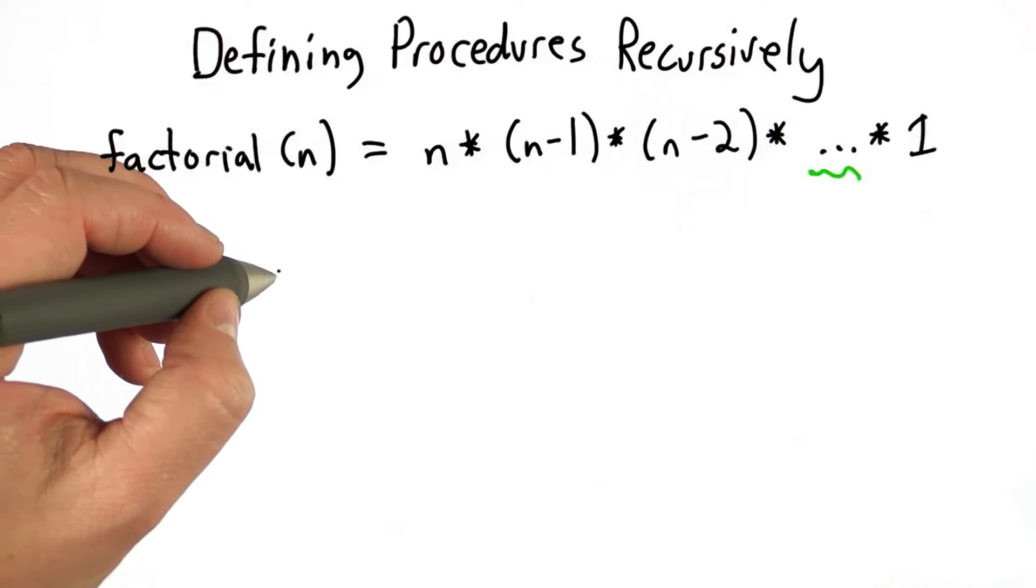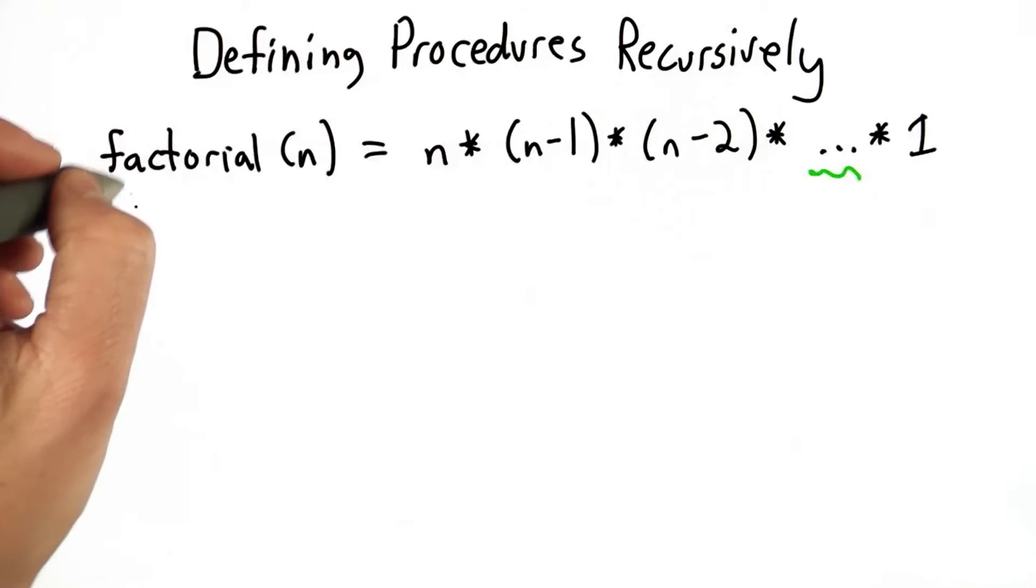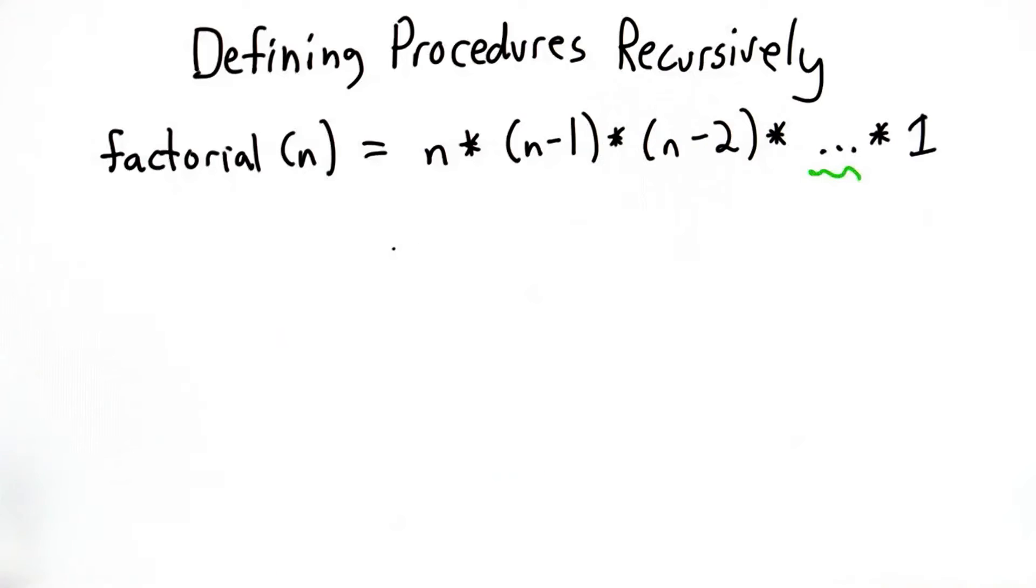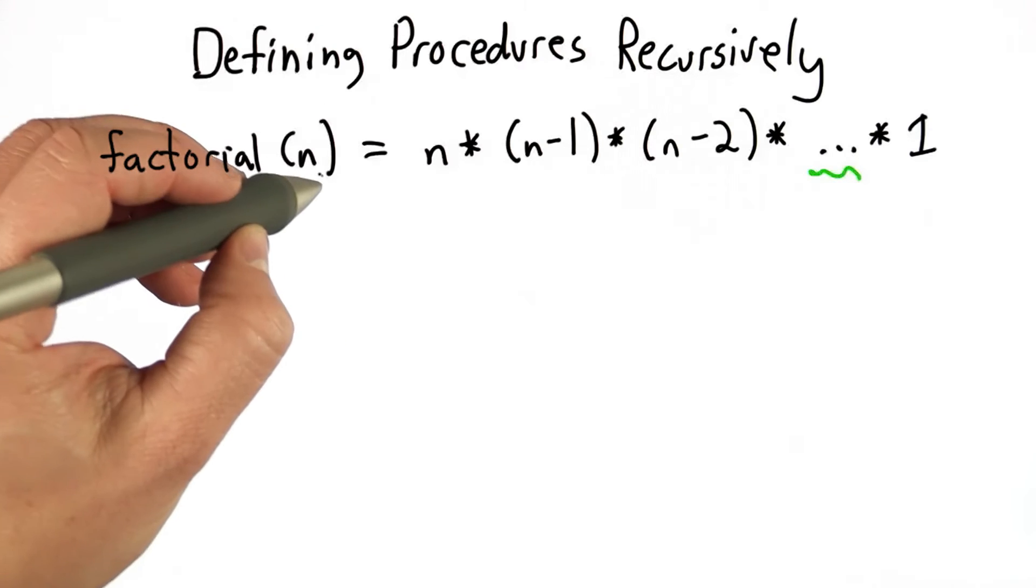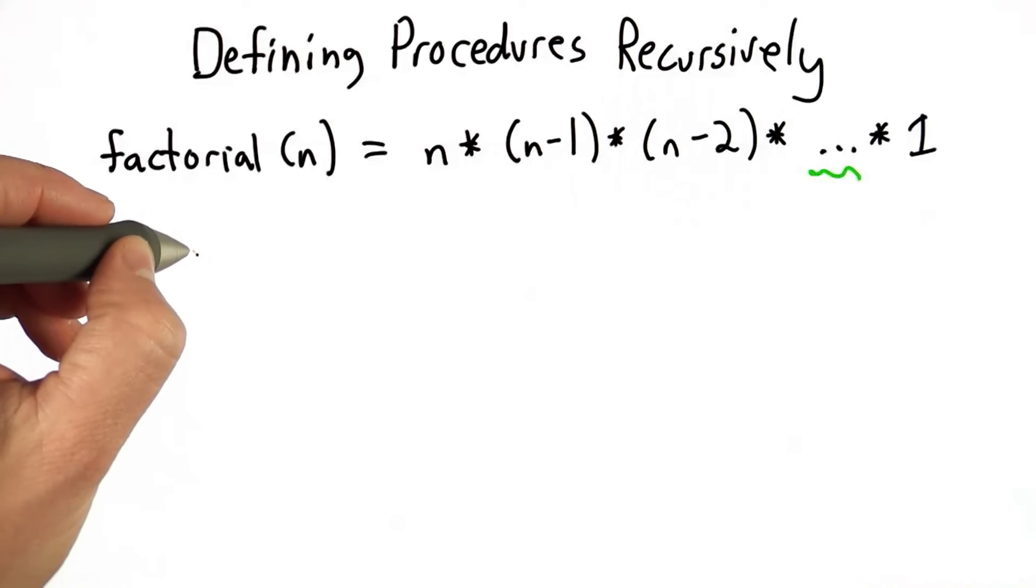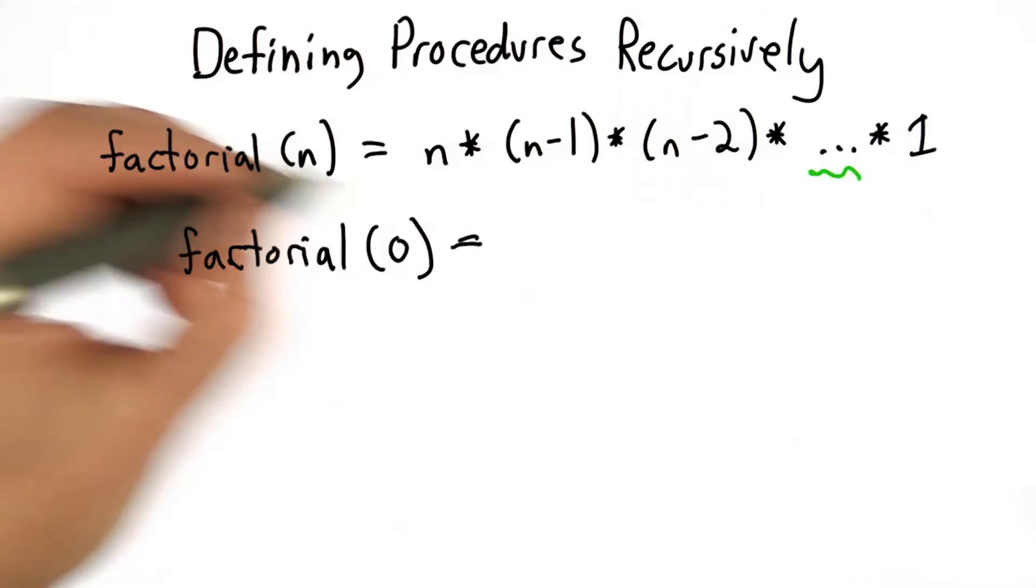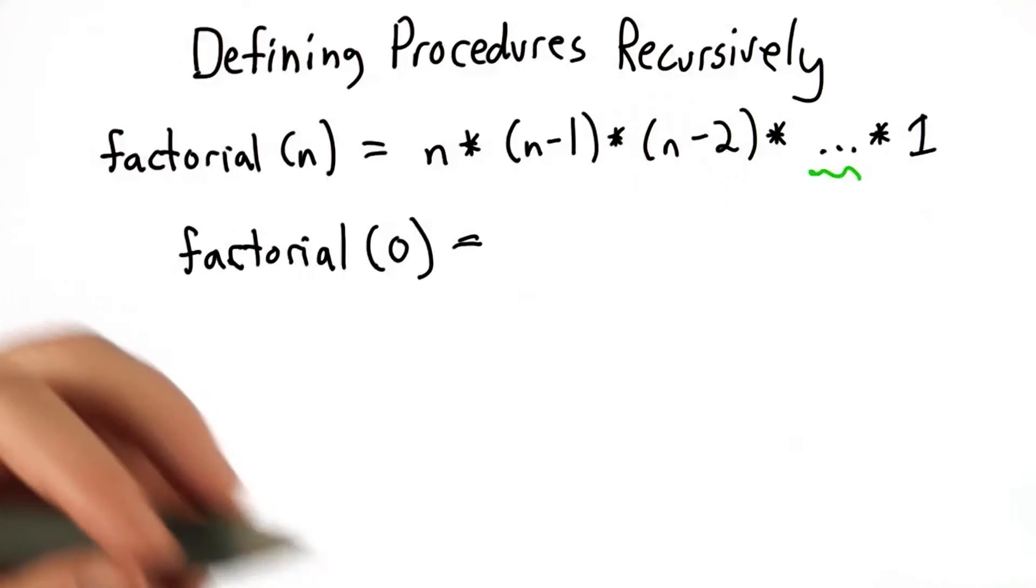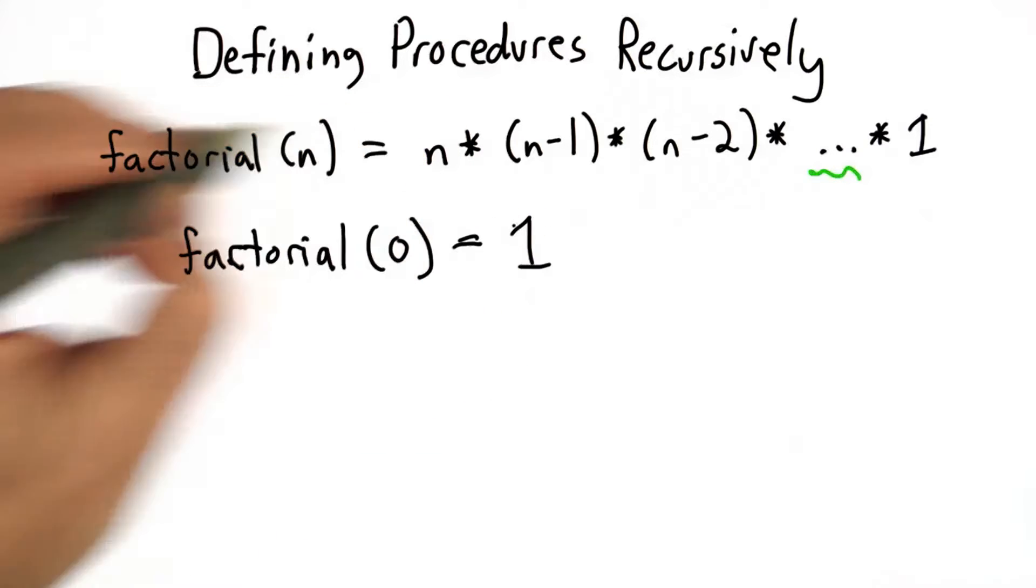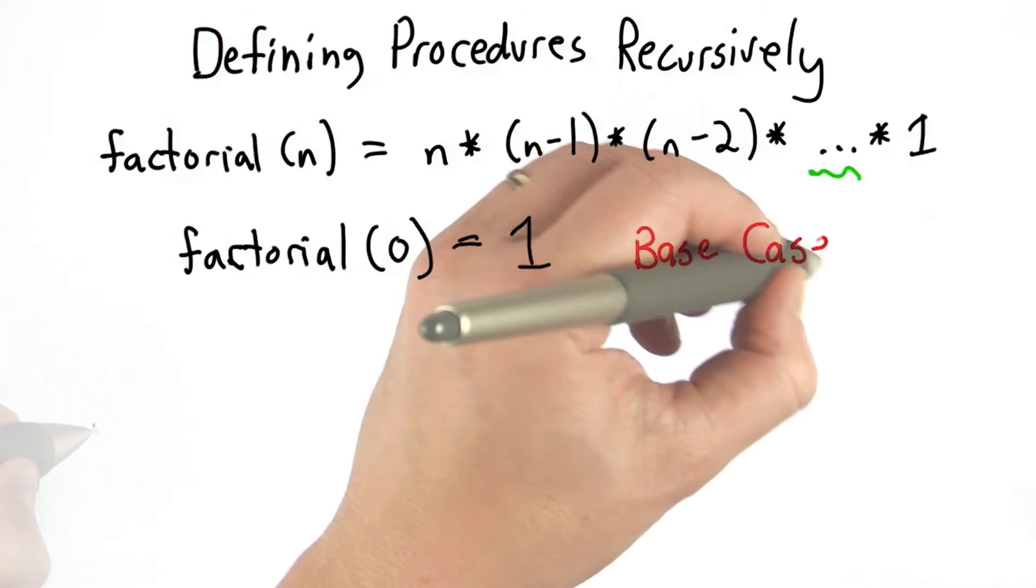And we need to do that by giving a base case. So for the base case, we want to think about the simplest input, something where we already know the answer. And for factorial, and for many procedures that involve numbers, the simplest input is the number 0. So if we try factorial 0, the number of ways to arrange 0 things is defined as 1. So we know that result. That's going to be our base case.